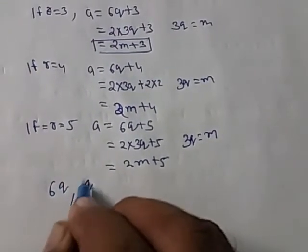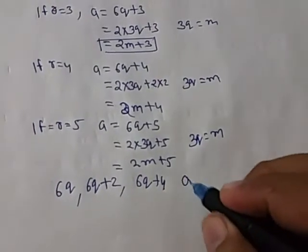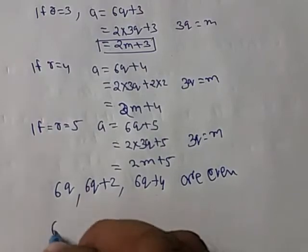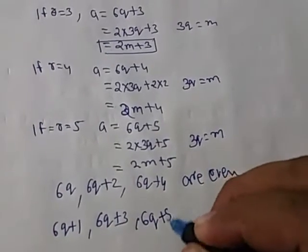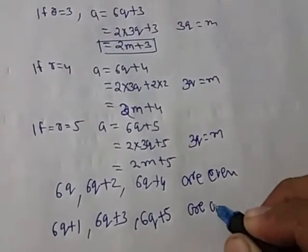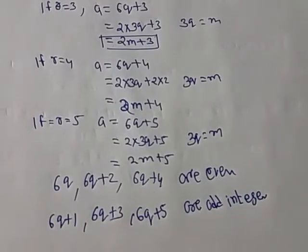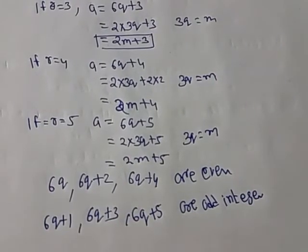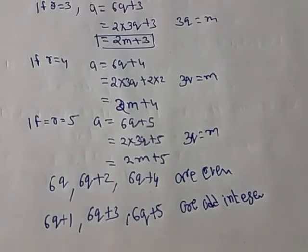So we can say that 6q, 6q plus 2, or 6q plus 4 are even integers, and the remaining integers 6q plus 1, 6q plus 3, and 6q plus 5 are odd integers. From this question it is very clear how to solve the application by using EDL. If you have any questions, thank you very much.